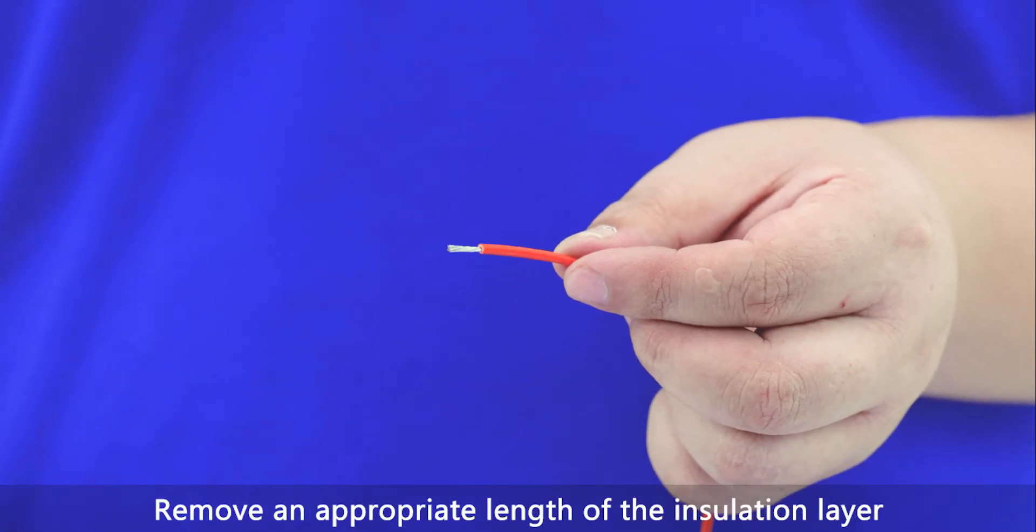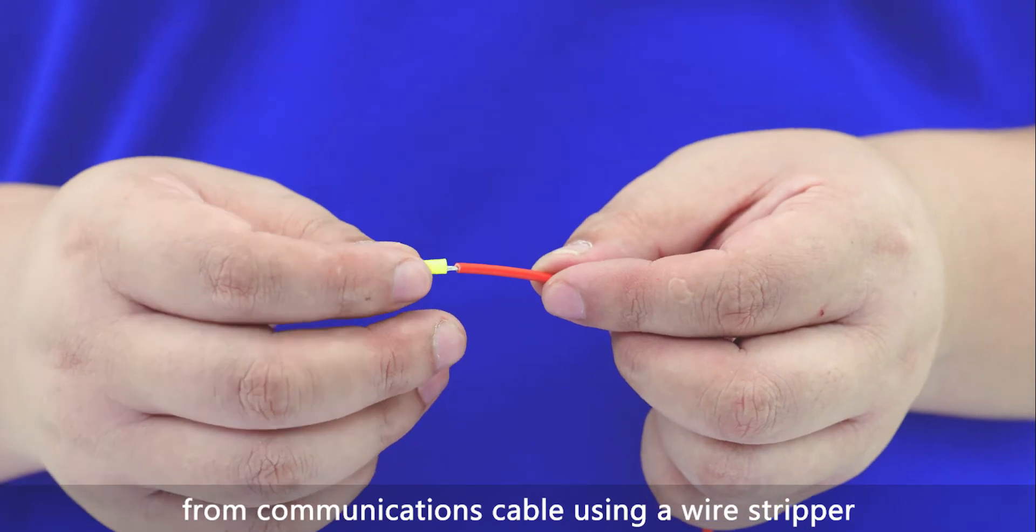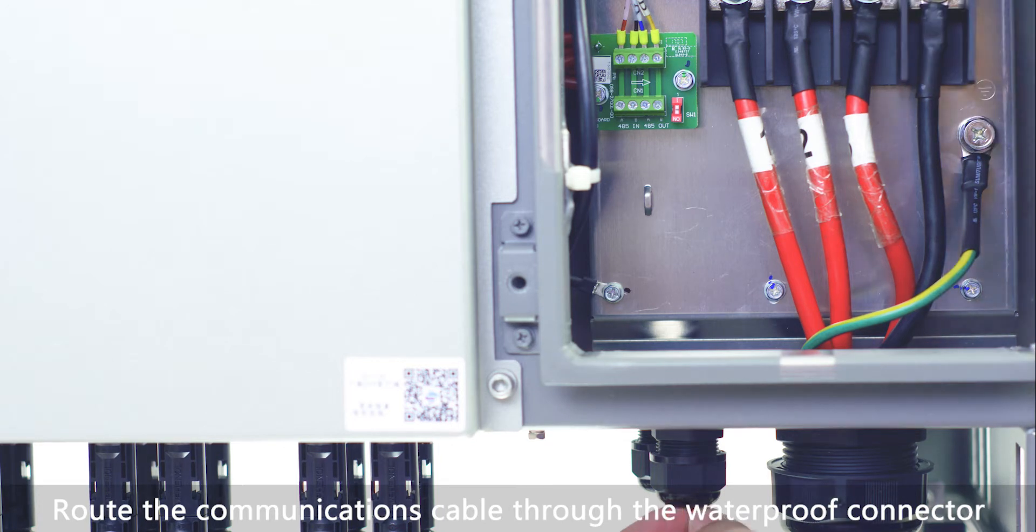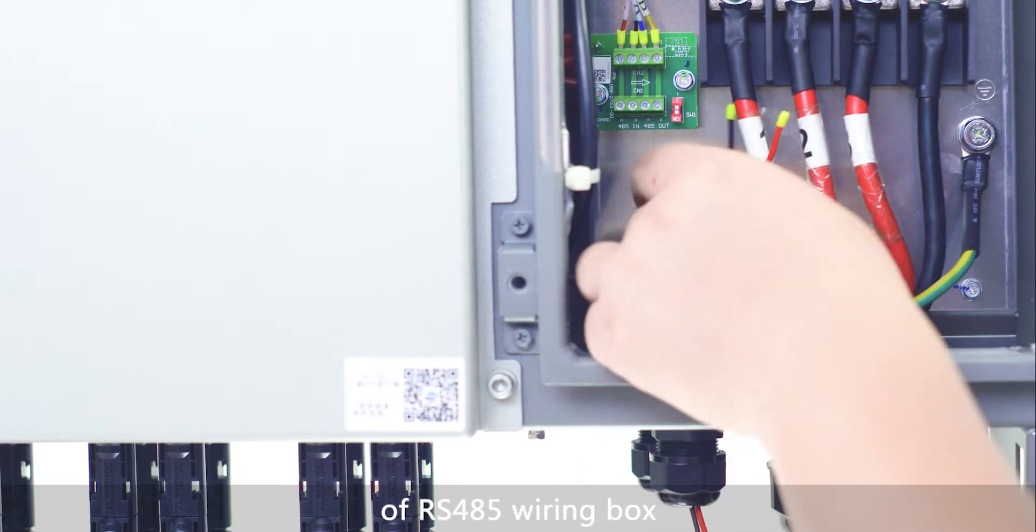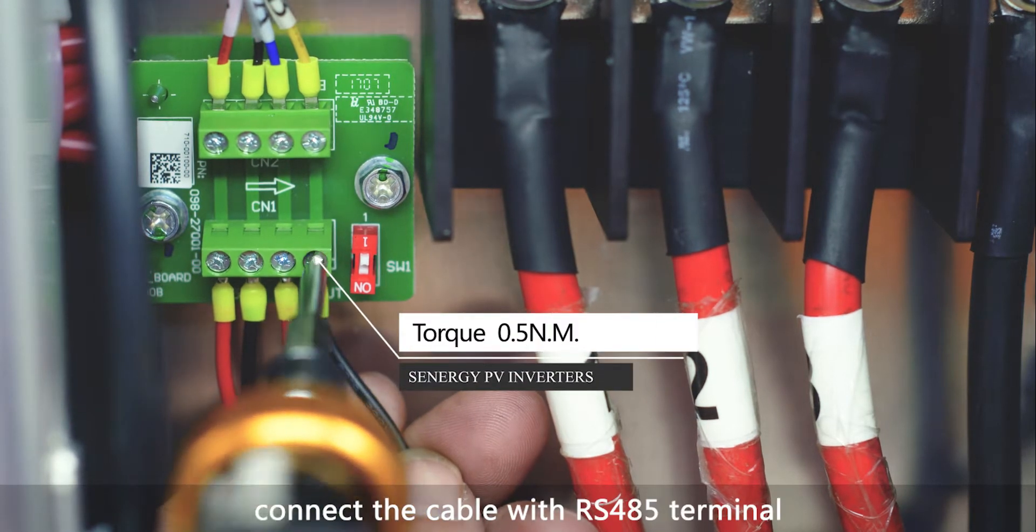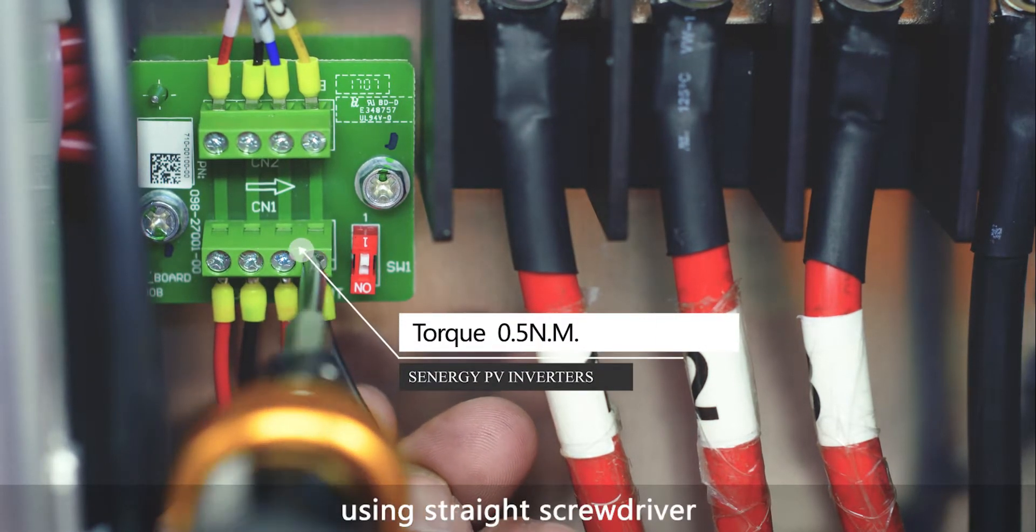Remove an appropriate length of the insulation layer from communications cable using a wire stripper. Route the communications cable through the waterproof connector of RS-485 wiring box. Connect the cable with RS-485 terminal using straight screwdriver.